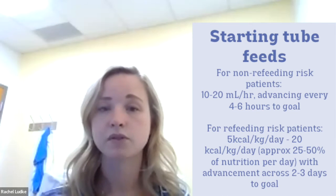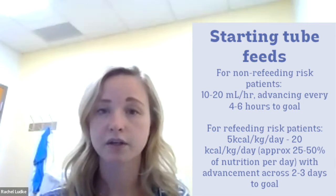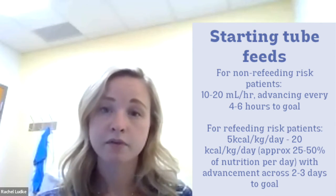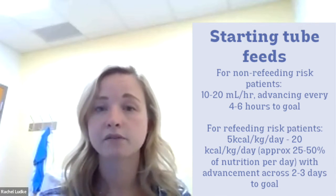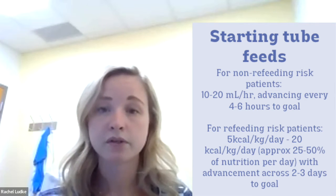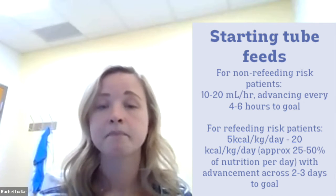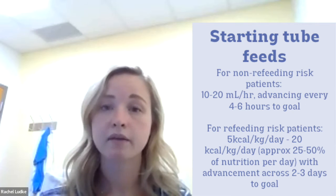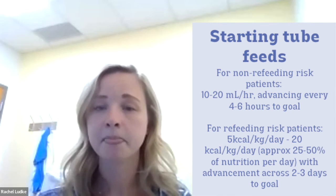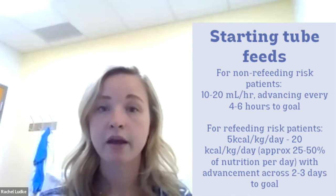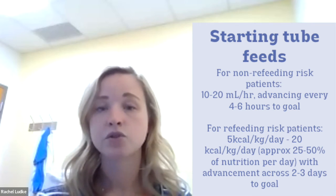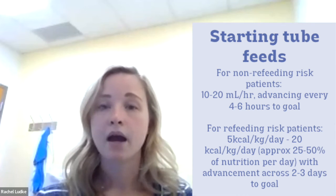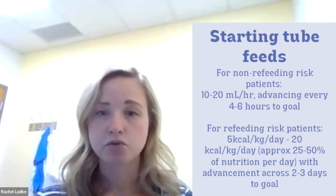With Mr. X, we're going to do a slow tube feeding initiation. The guidelines for tube feeding initiation vary greatly. In patients that aren't at risk for refeeding syndrome, we can start tube feeding usually at 10 to 20 milliliters an hour and advance anywhere between every four to six hours to our goal rate. With refeeding syndrome, we want to make sure that we're not giving the patient all of their calorie needs in one day. The recommendations vary greatly for that, anywhere between about five calories per kilogram per day to 20 calories per kilogram per day, which equates to about 25 to 50 percent of their nutrition in a day.